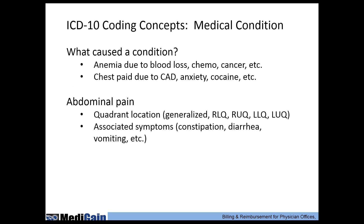On some conditions, make sure you identify causation. A patient who initially comes in with anemia — after workup you determine it's due to chronic kidney disease or chemotherapy — should have the anemia diagnosis change from an unspecified code to that more specific code. For chest pain, identify the etiology. For abdominal pain, note the quadrant location and any associated symptoms.